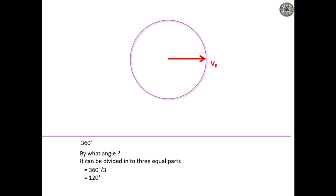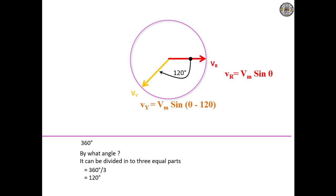Taking the first voltage as V_R, as seen in single-phase circuits, the equation is V_R = V_M sin(ωt). Now, at 120 degrees apart, we have a second voltage V_Y, given as V_M sin(ωt − 120°). The reason for writing minus 120 degrees is that as we rotate in clockwise direction, we assign a negative value.